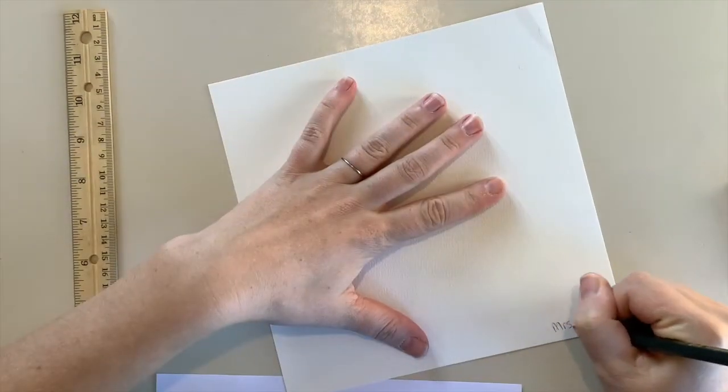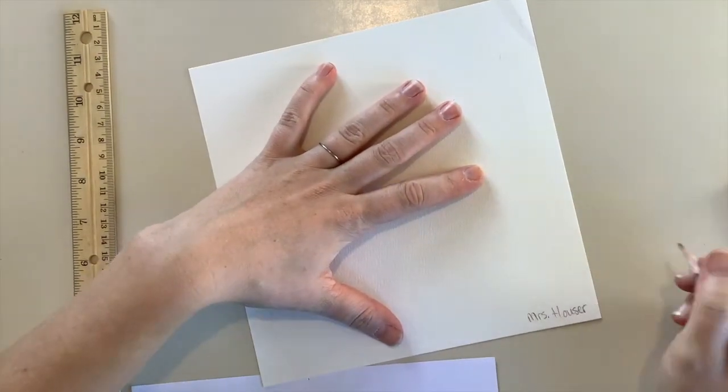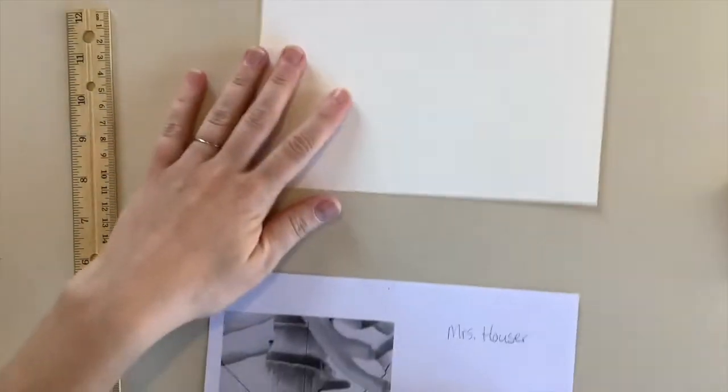Step one is to put your name on the front side of your skeleton reference photo and on the back side bottom right-hand corner of your watercolor paper so you never lose your artwork.